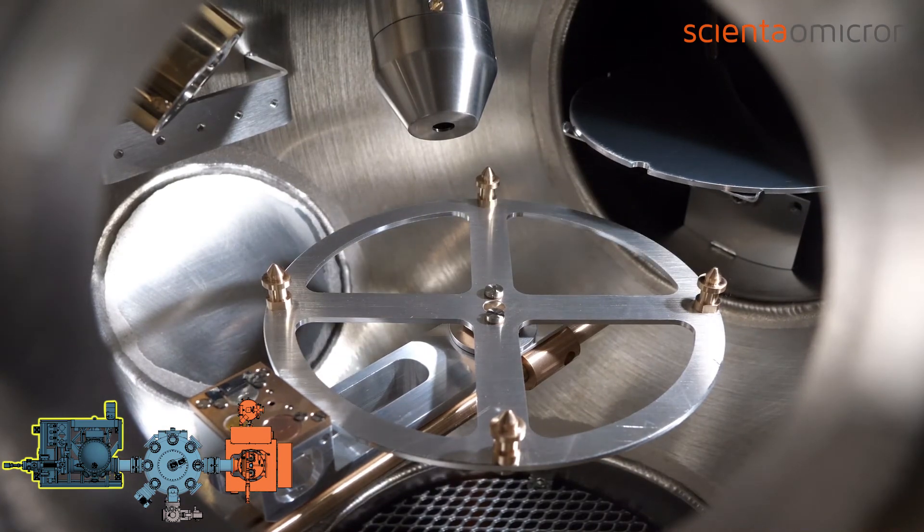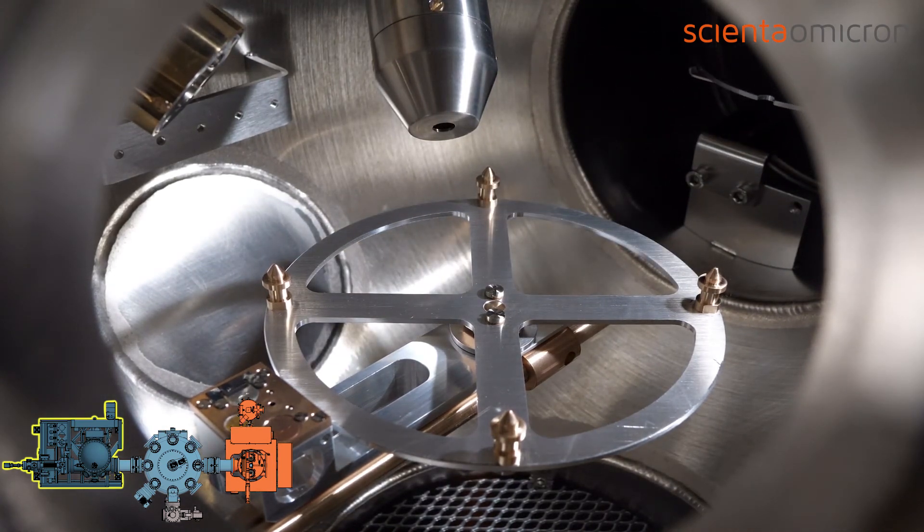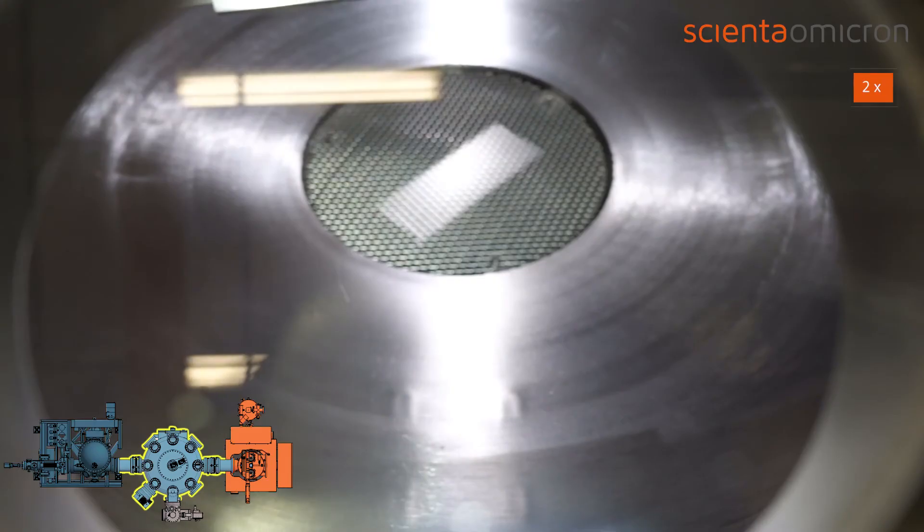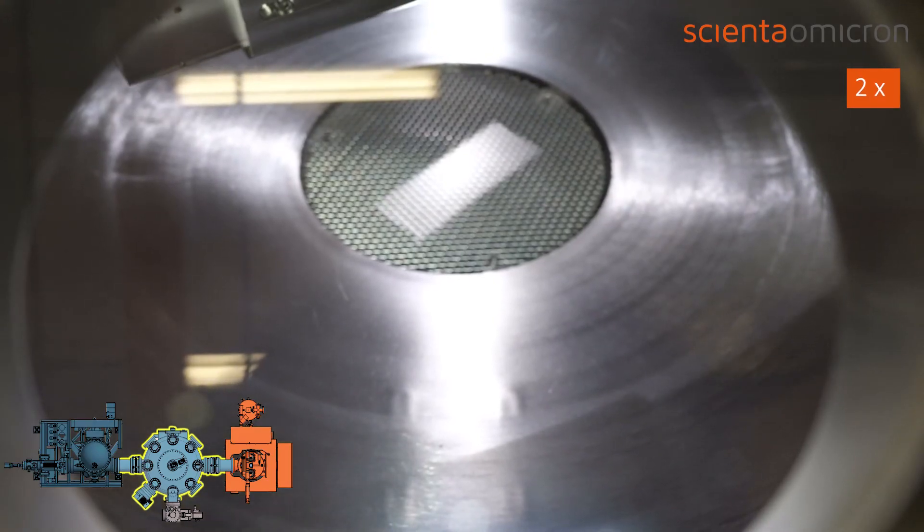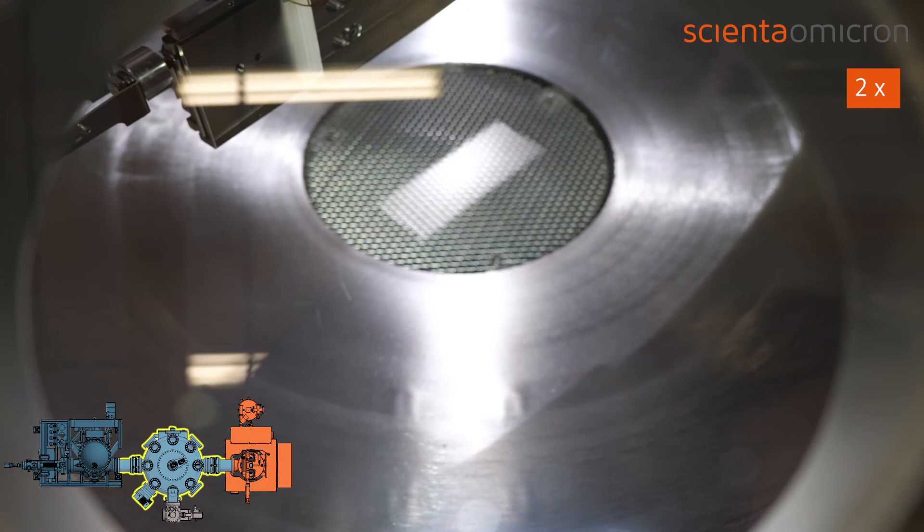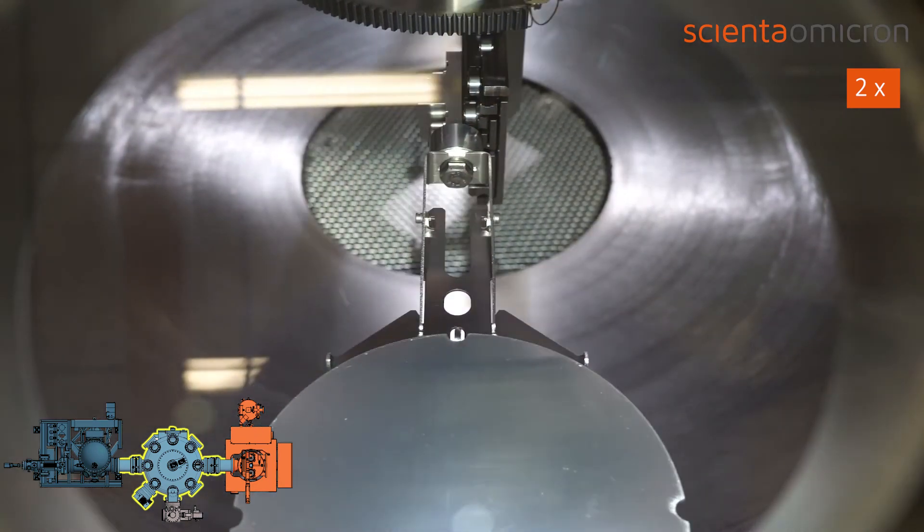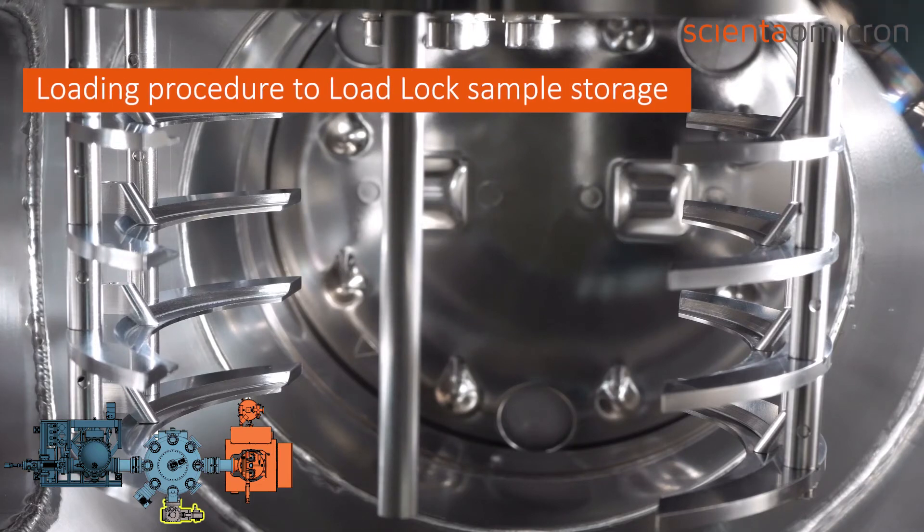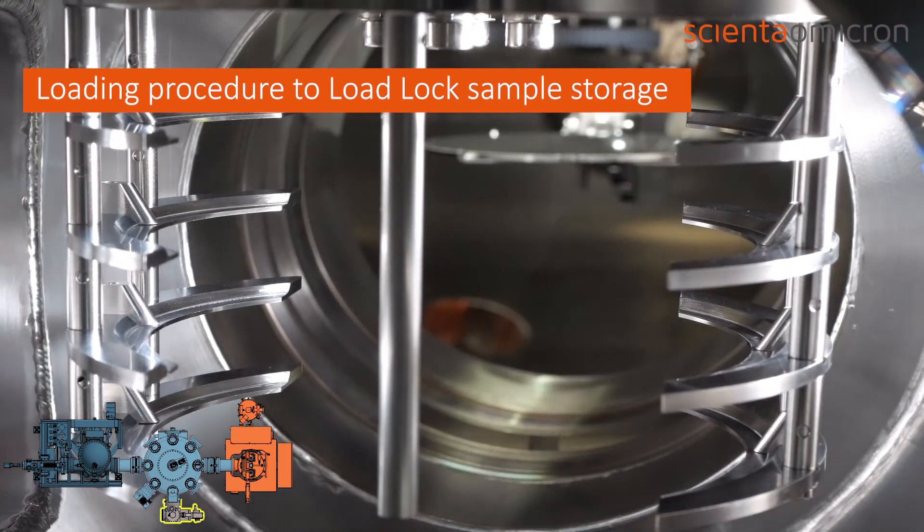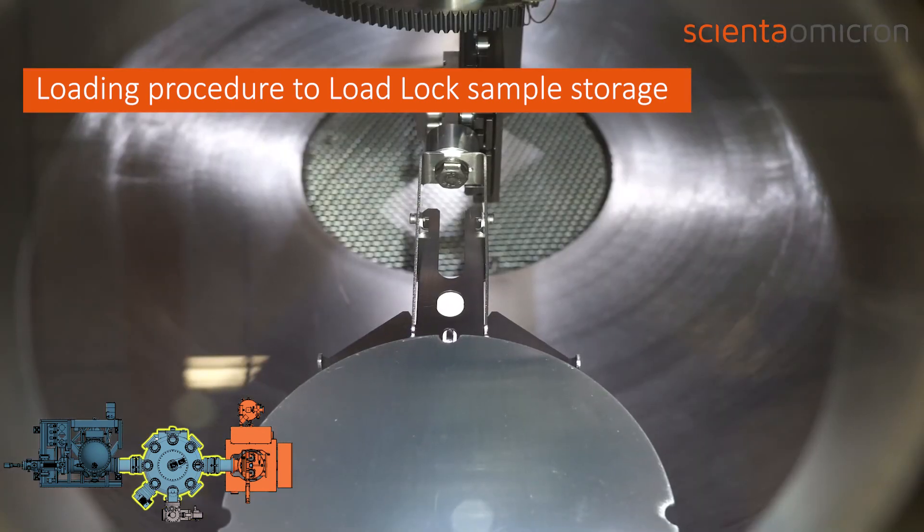The last transfer procedure demonstrates how the wafer holder is loaded to the sample storage in the load lock. After initializing the sample loading process, the robotic arm rotates towards the connection flange to the load lock. When the robotic arm is in position, the UHV gate valve opens, and subsequently the arm extends into the load lock chamber.